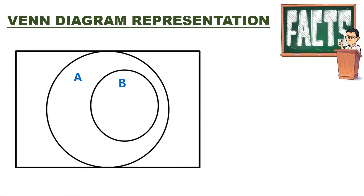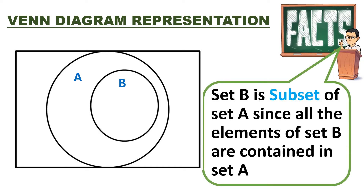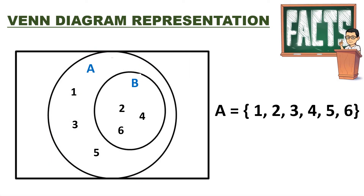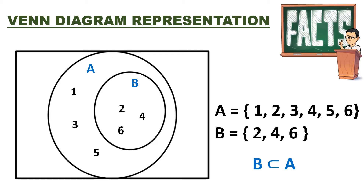Let's look at Venn Diagram representation. In a given Venn Diagram, we can see that set B is inside set A. So, set B is a subset of set A since all the elements of set B are contained in set A. If we list the elements of set A, we have 1, 2, 3, 4, 5, 6, and the elements of B are 2, 4, 6. So, set B is a subset of set A since all the elements of set B can be found in set A.